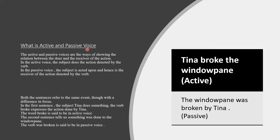What is active and passive voice? The active and passive voices are ways of showing the relationship between the doer and the receiver of the action. In an active voice, the subject does the action denoted by the verb. For example: Tina broke the window pane. To identify the subject, ask 'who' to the verb — who broke the window pane? The answer is Tina. So in active voice, the emphasis is clearly on Tina.